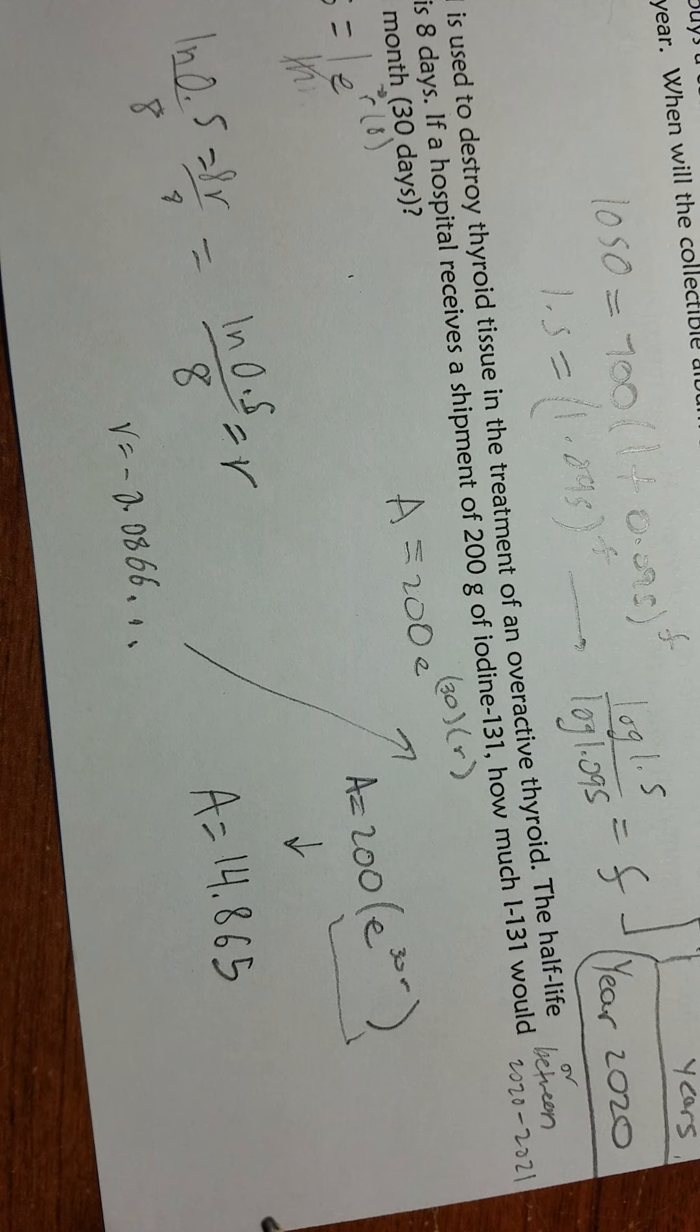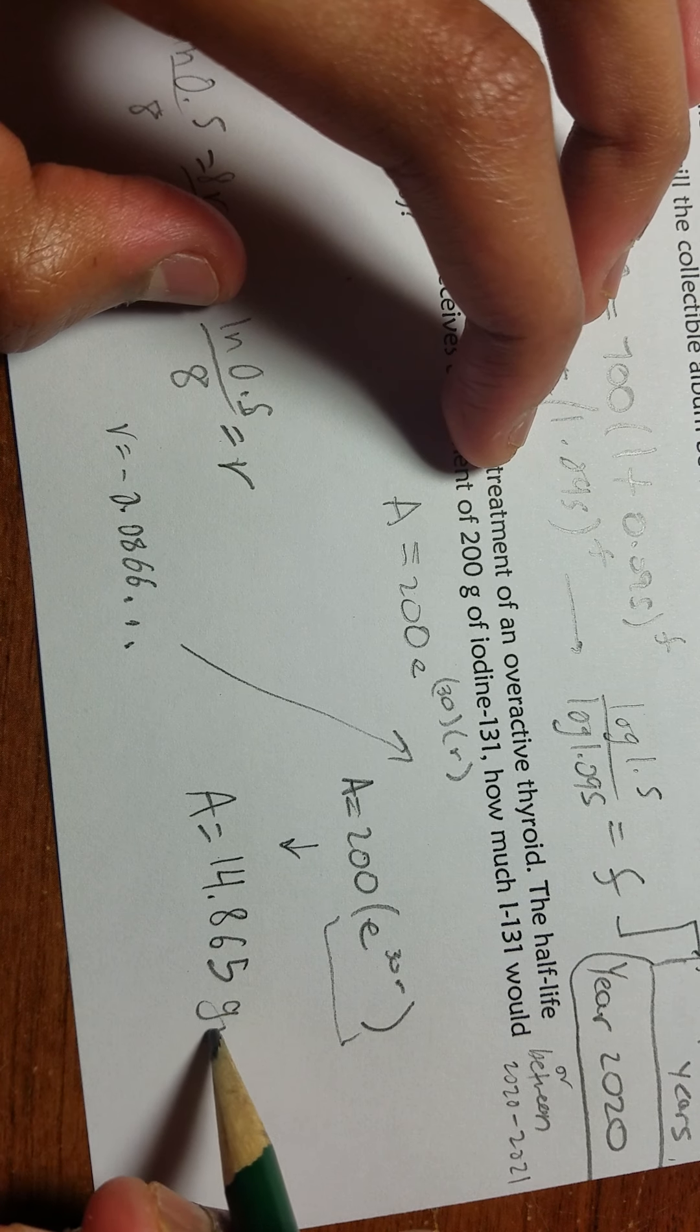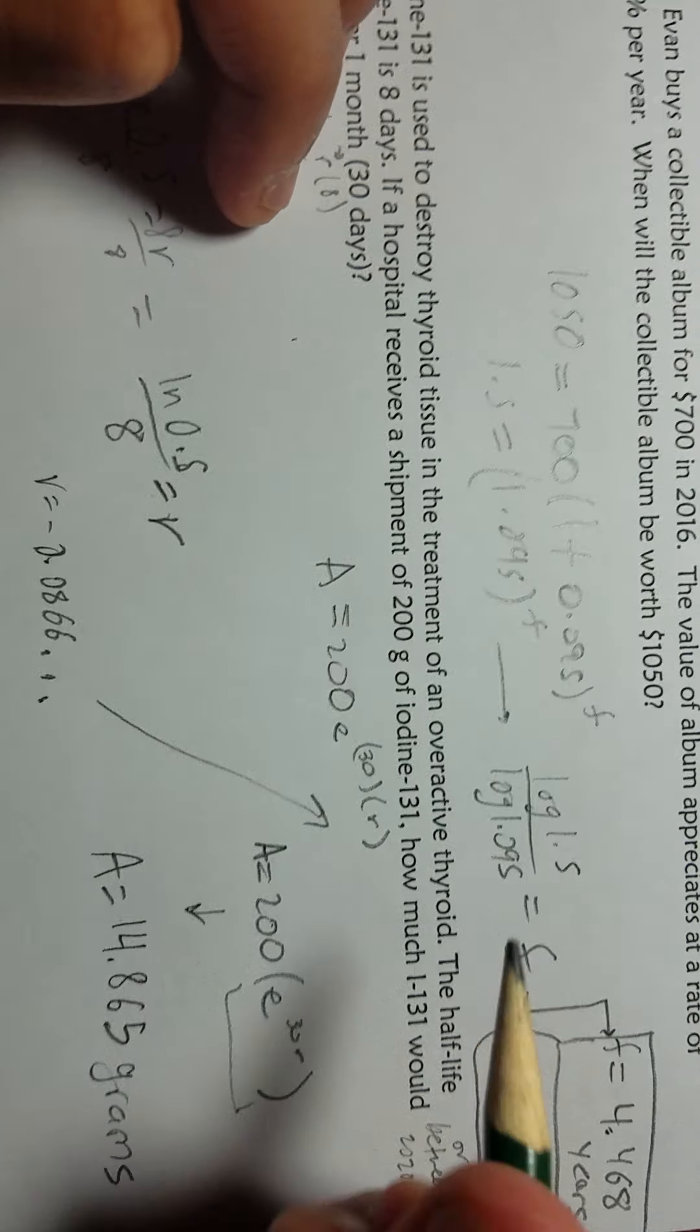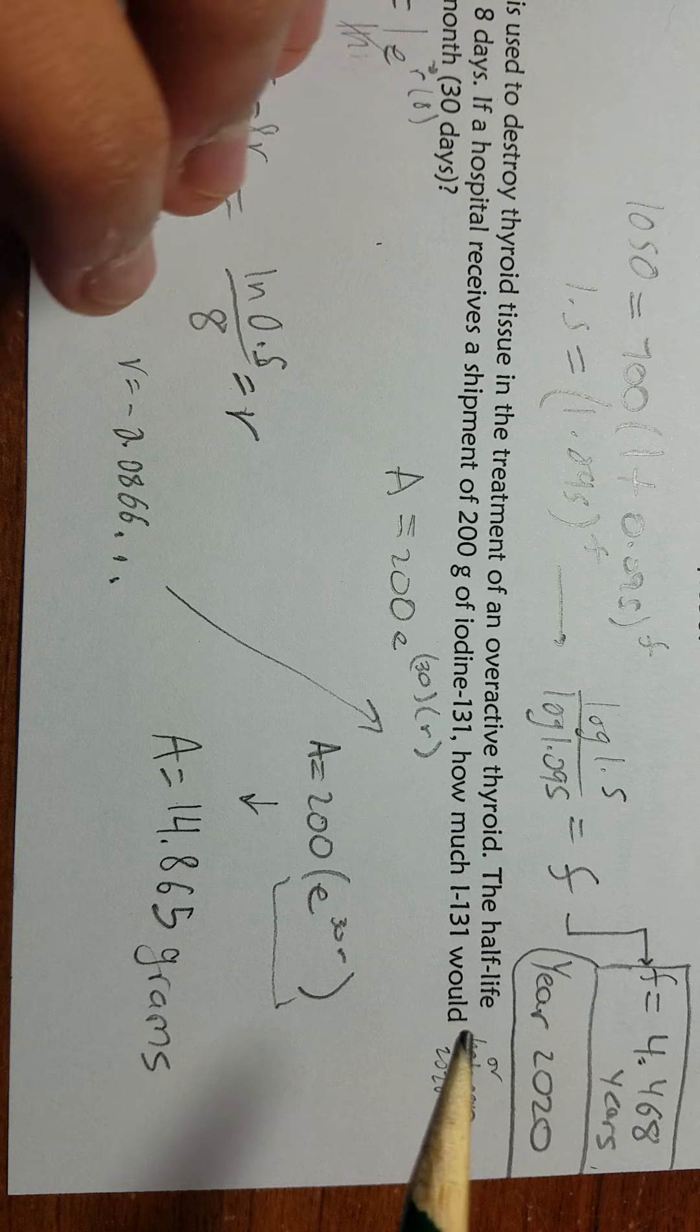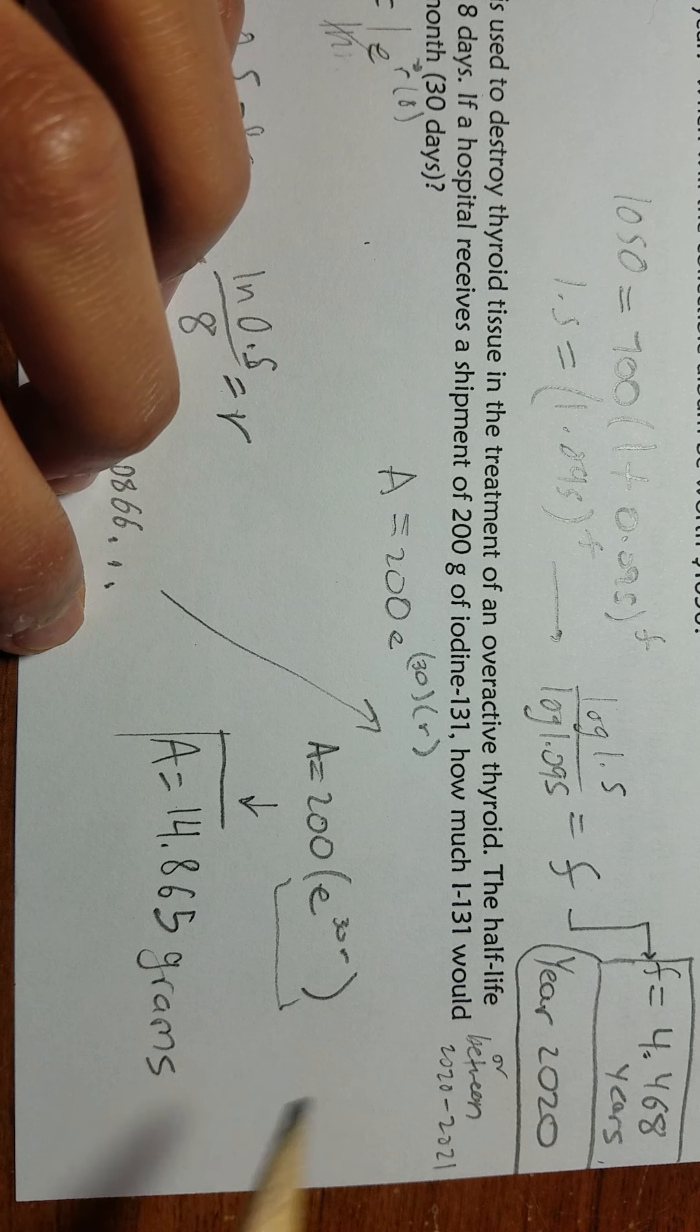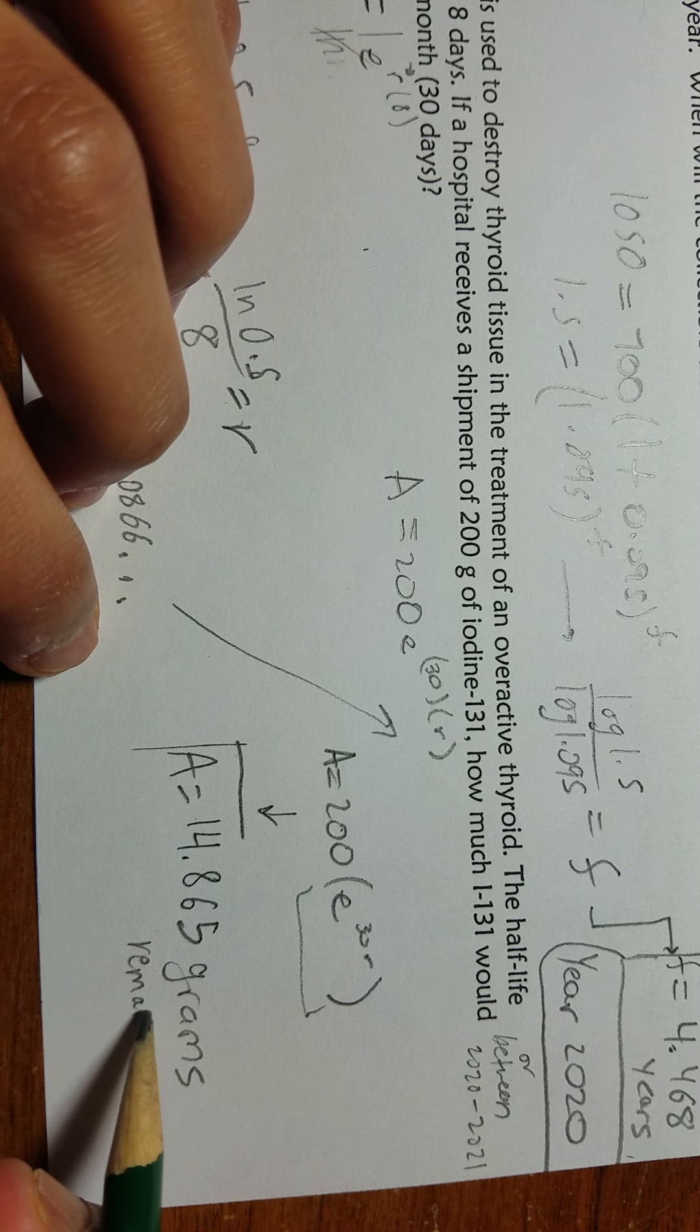Obviously you have to put your units. It's grams because they showed grams right here, so that's what's going to be left over: grams remaining.